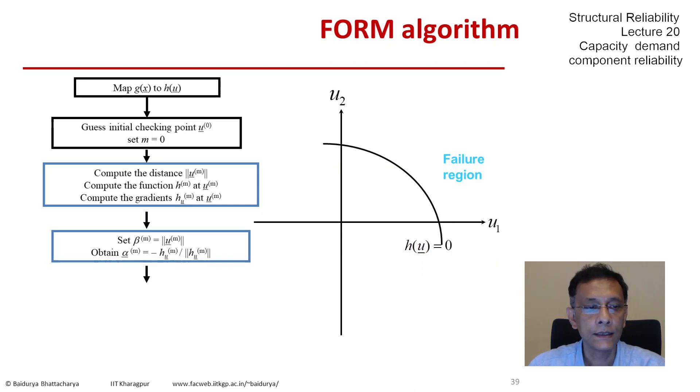By normalizing the gradients of h, we obtain the direction cosines alpha. So h_u is the partial derivative of h with respect to u1 and u2 as the case may be. Then we obtain a new point, the next one in the iteration, in terms of the direction cosines, the earlier stored distance beta, and a correction factor which depends on the current value of the function and the norm of its gradient.